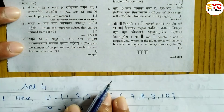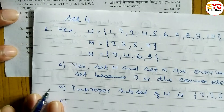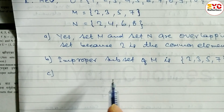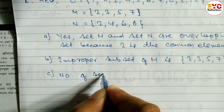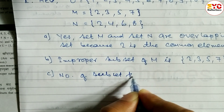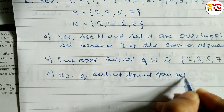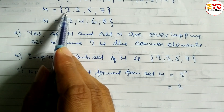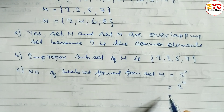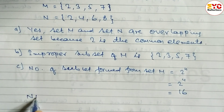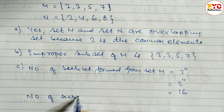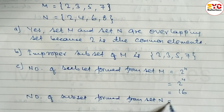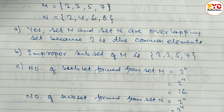Question (c): Compare the number of proper subsets that can be made from set M and set N. How many subsets can be formed from set M, and how many from set N? The number of subsets formed from set M is equal to 2 power n — 2 to the power 4, since there are 4 elements — which equals 16. Similarly, the number of subsets formed from set N is also 2 to the power 4, which equals 16.